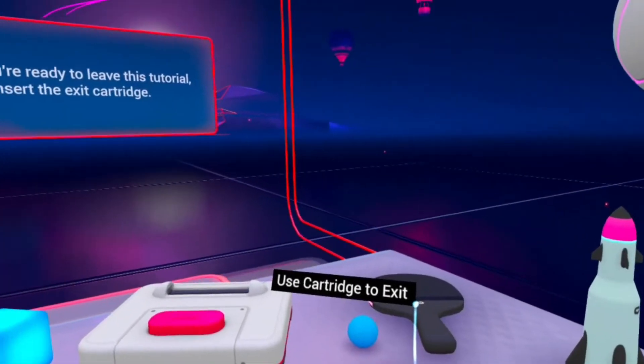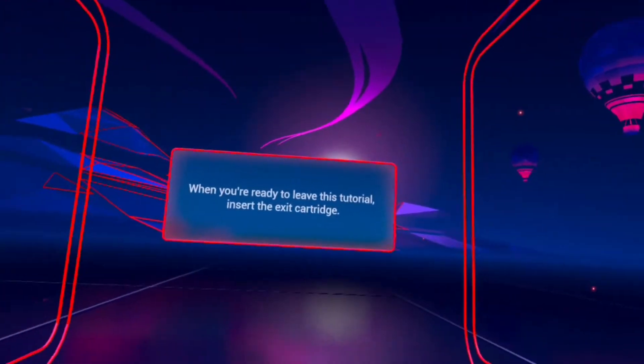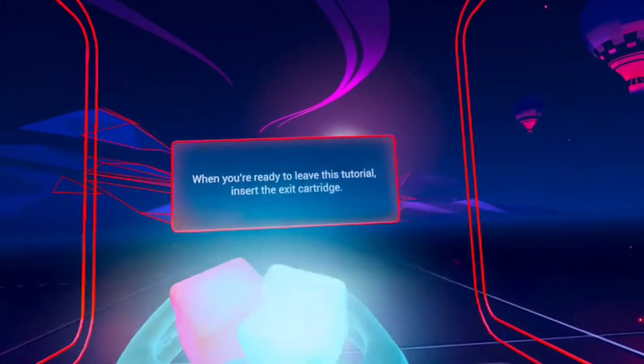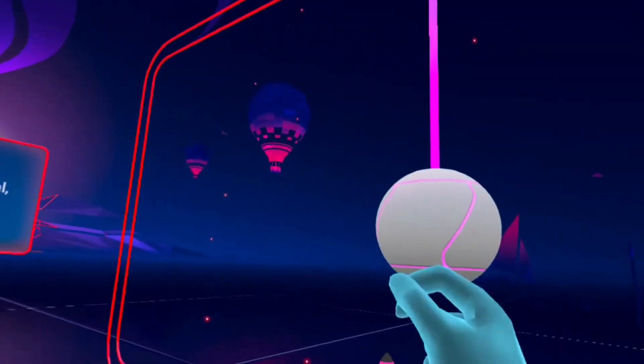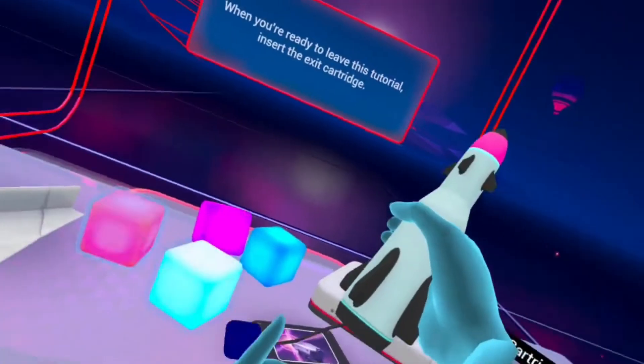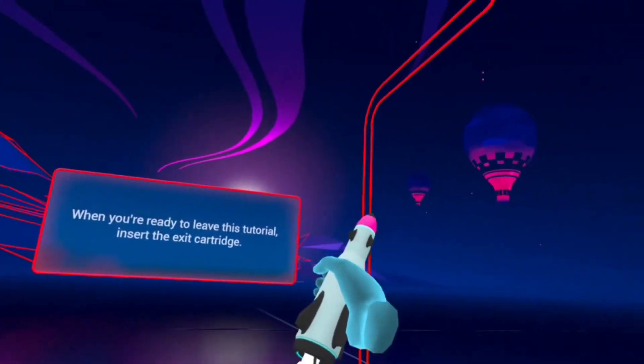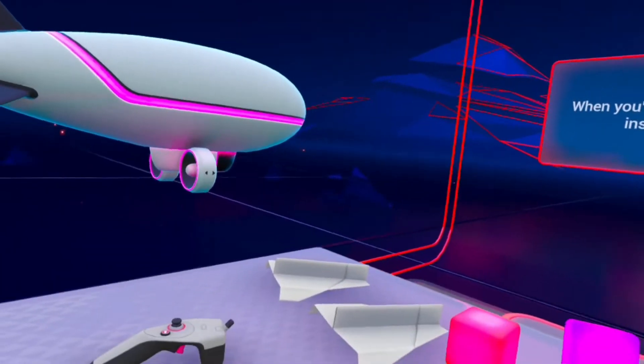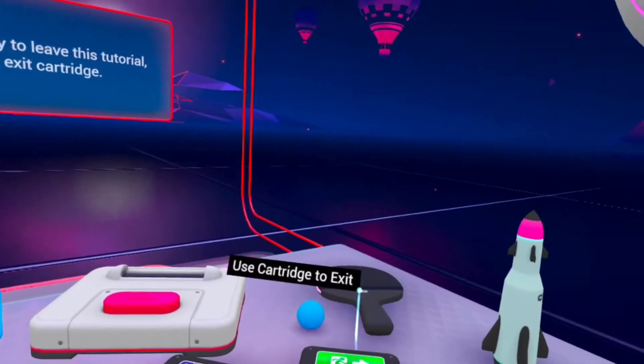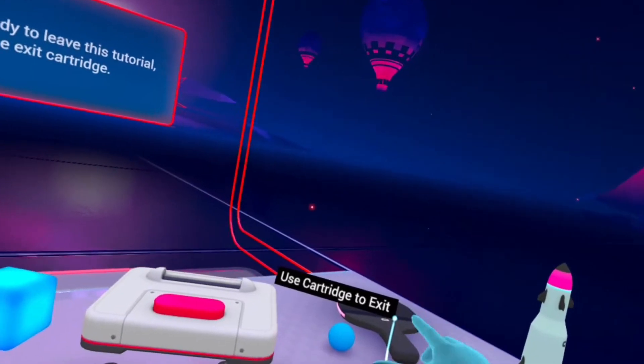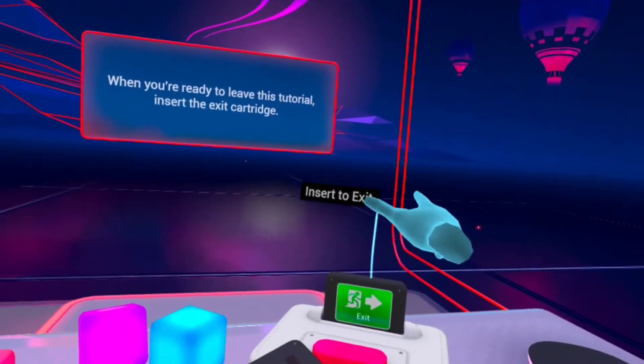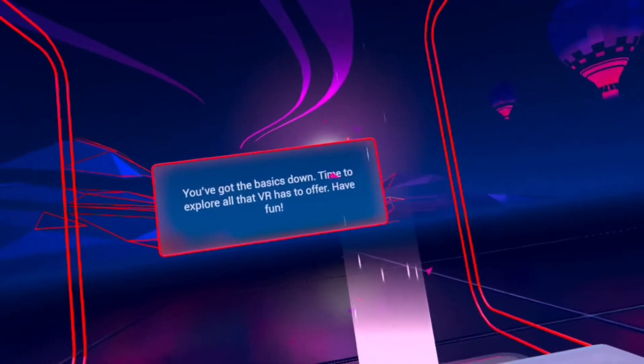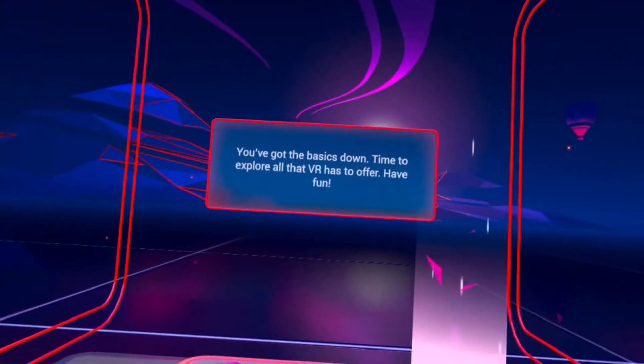When you're ready to leave this tutorial, insert the exit cartridge. You can spend some time in here playing with the blocks and stuff so you get used to doing stuff. When you start out here, and then whenever you're done, you just grab the exit cartridge and hit exit. Press the button. That's the end. Time to explore all that VR has to offer. Have fun.